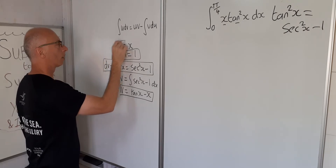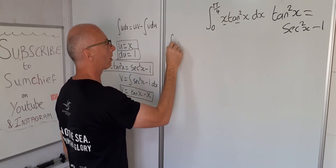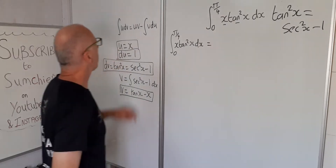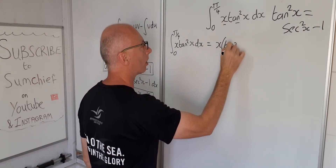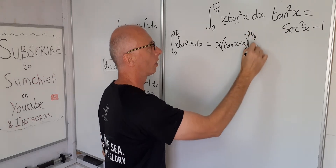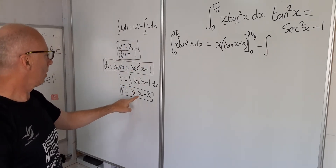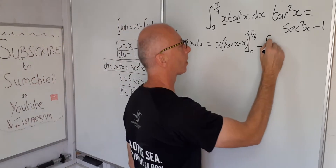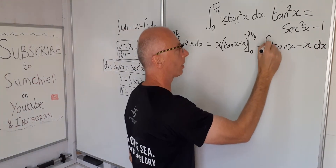Continuing with the formula: the integral of x times tangent squared x from 0 to pi over 4 equals u times v, which is x times (tan x minus x), evaluated from 0 to pi over 4, minus the integral of v du, which is the integral of (tan x minus x) times 1 dx, from 0 to pi over 4.